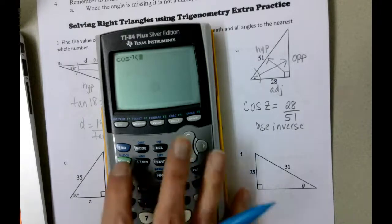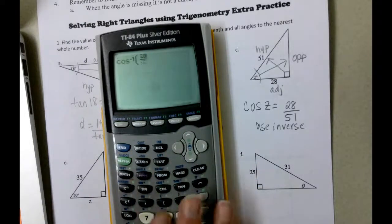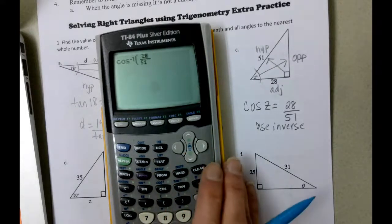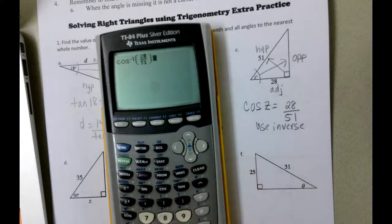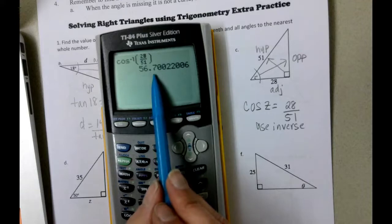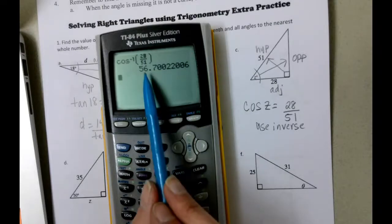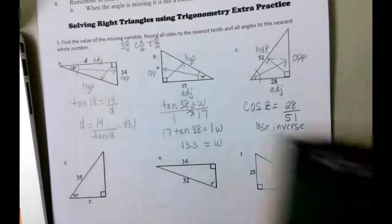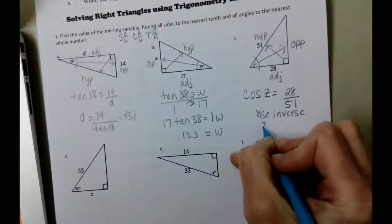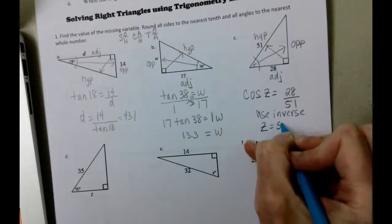And then we do our 28 divided by 51. And again, now it looks exactly like what Desmos would look like. And then we press enter. This is going to give us our angle. And for the angle, we're going to round to the nearest whole number. So we get 56.7. And because it's 0.7 here, that number is 5 or higher, we're going to round our angle to 57 degrees. So Z equals 57 degrees.